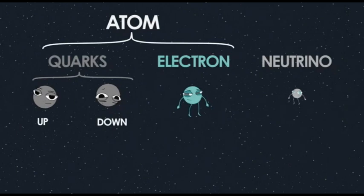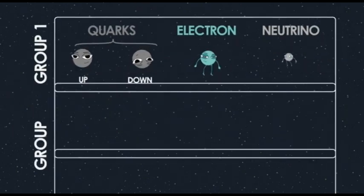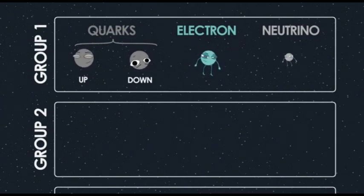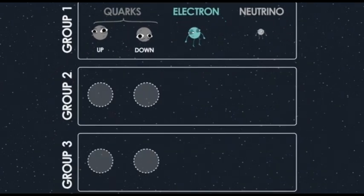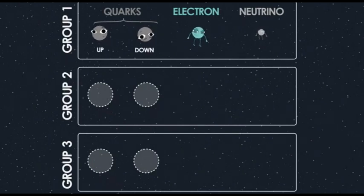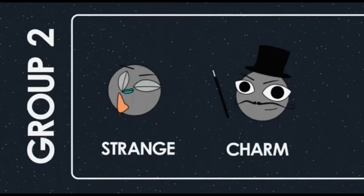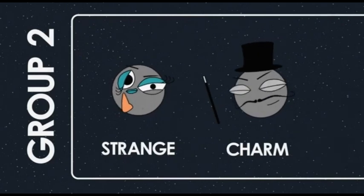It turns out there are a lot more fundamental particles. There are actually two more groups of four particles just like our group of four, except heavier — they have more mass. So there are actually six quarks, not two. The up and down quark form a pair, and then there's another pair: the strange and charm quark.